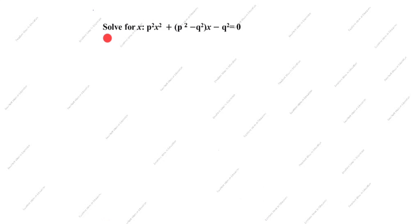Hi friends, welcome to my channel, Excellent Ideas in Education. Today we are going to solve this quadratic equation problem. This is a very important problem. Solve for x: p²x² + (p² - q²)x - q² = 0.